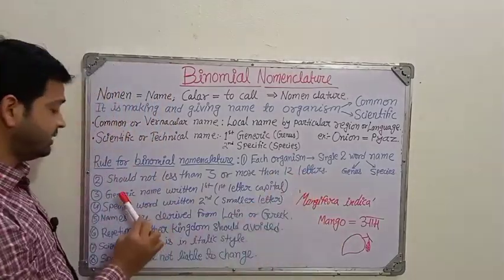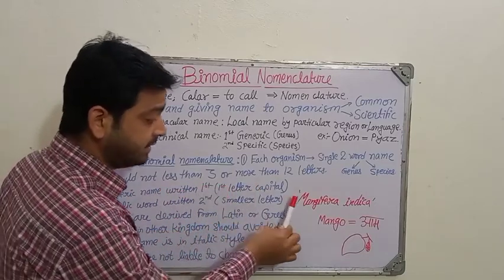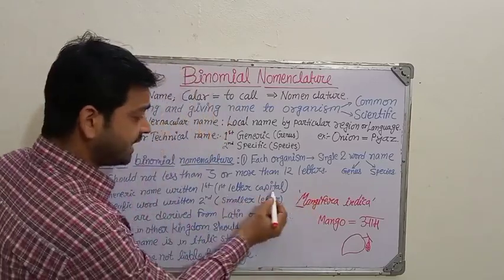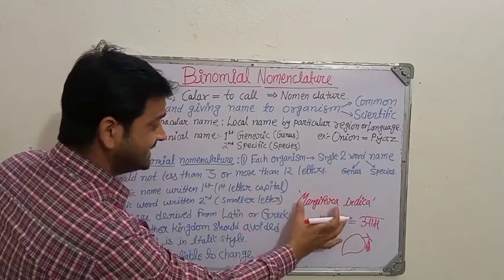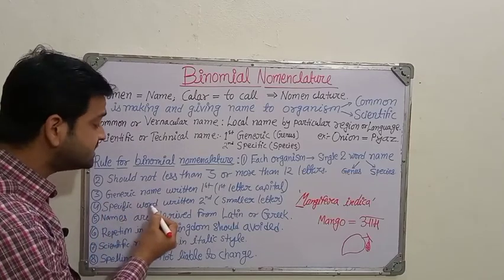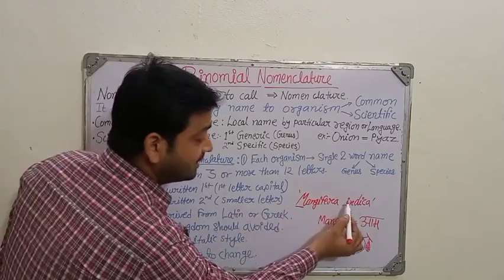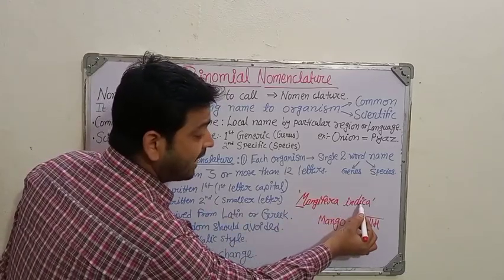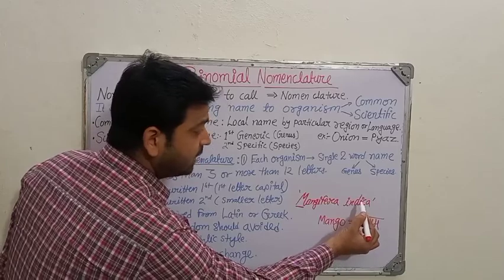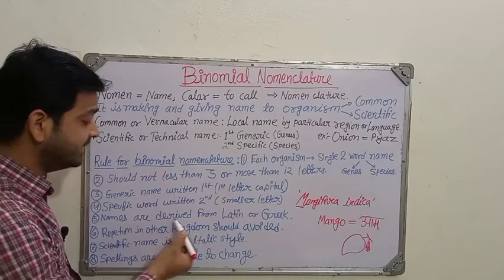Rule three: the generic name is written first with the first letter in capital. In Mangifera, 'M' is capitalized. Rule four: the specific word or species name is written second and all in small letters. For example, indica — i, n, d, i, c, a — is entirely in small letters.